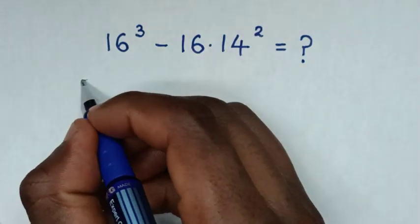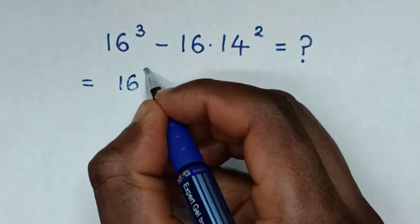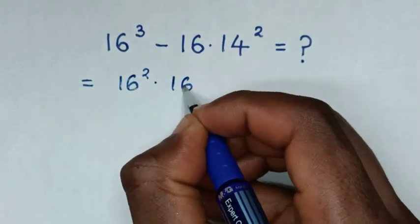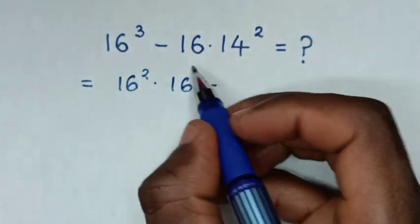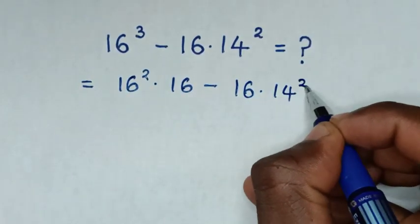So it will be equal to, 16 power 3 is same as 16 square times 16, then minus 16 times 14 square.